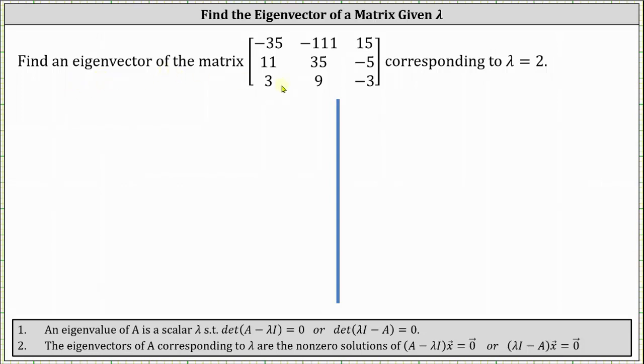We're asked to find an eigenvector for the 3×3 matrix corresponding to λ = 2. The eigenvectors of matrix A corresponding to λ are the nonzero solutions to the equation (A - λI)x = 0.